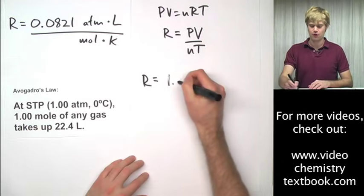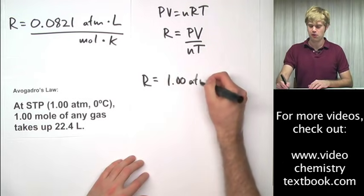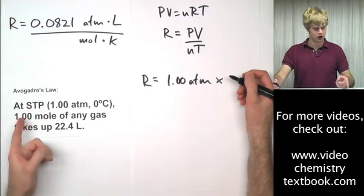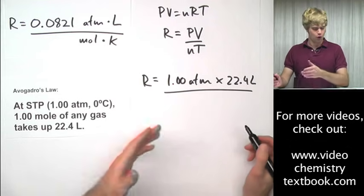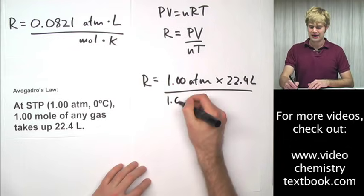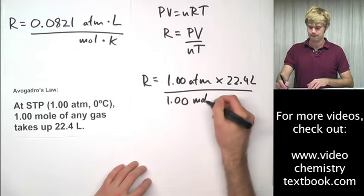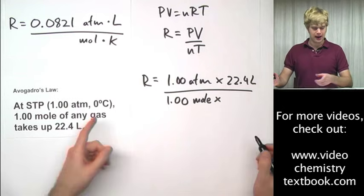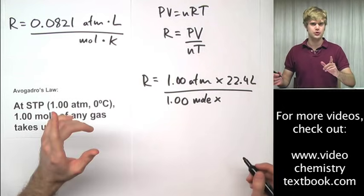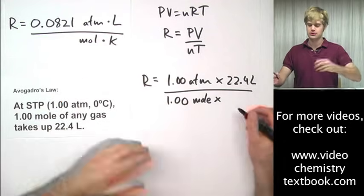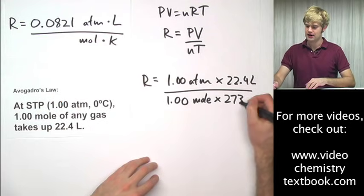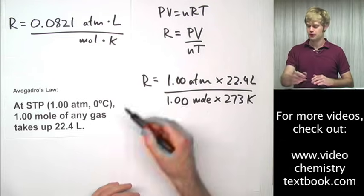At STP, we have 1.00 atm times a volume of 22.4 liters, and one mole of gas takes up that much space at zero degrees Celsius. We always want to use Kelvin. We add 273 to degrees Celsius, so it's going to be 273 Kelvin.